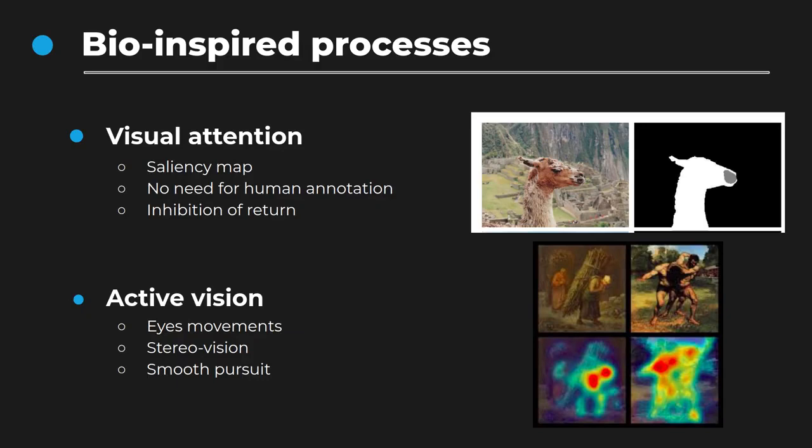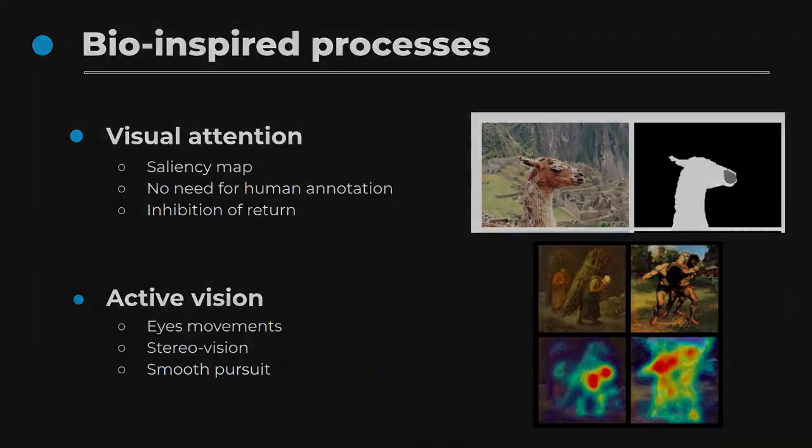A humanoid robot can reproduce this behavior, facilitating the processing of information coming from the sensor. For example, by selectively looking at one object at a time, this allows breaking down a complete scene into several simple parts, which can be used to create a dataset for learning.